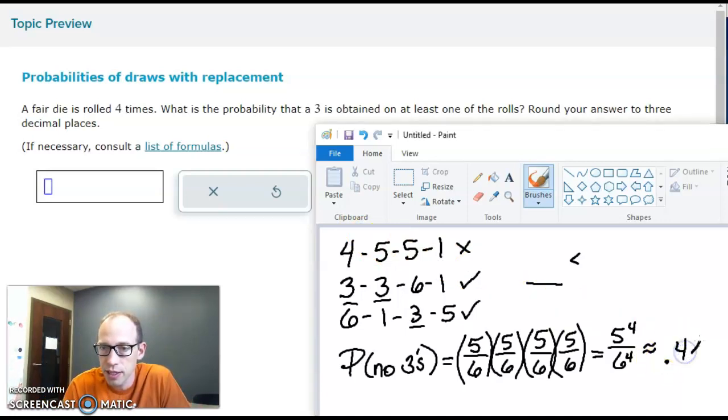Now remember, this isn't our final answer. This is the chance of getting no threes. They want the probability of at least one three, which is exactly the opposite of what we found.